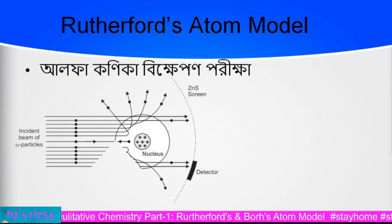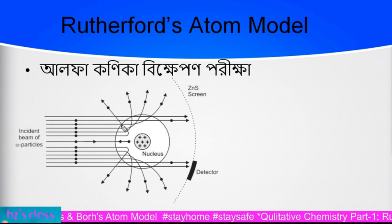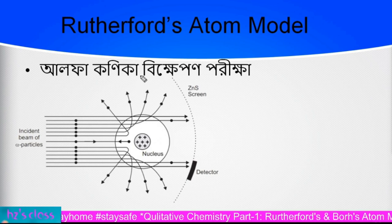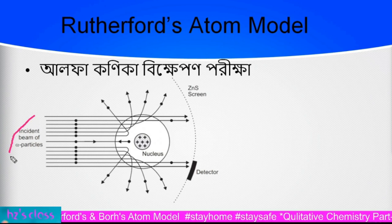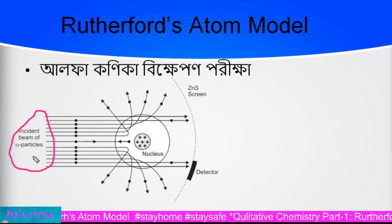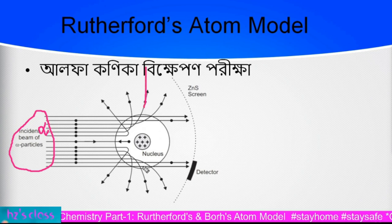We can see here the zinc sulfide screen. This is the gold sheet that we see here. This is the source of alpha particles — the source of the atom.